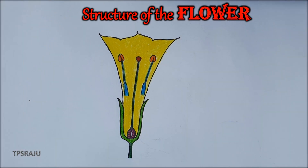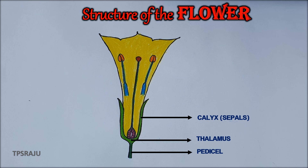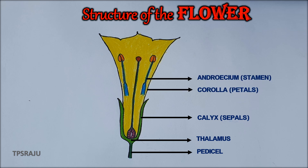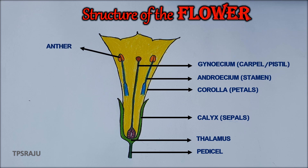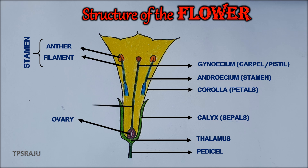Finally, shall we label the parts: pedicel, thalamus, calyx, corolla, androecium, gynoecium, anther, filament — these are the parts of the stamen. Ovary, style, stigma — these are the parts of the carpel.